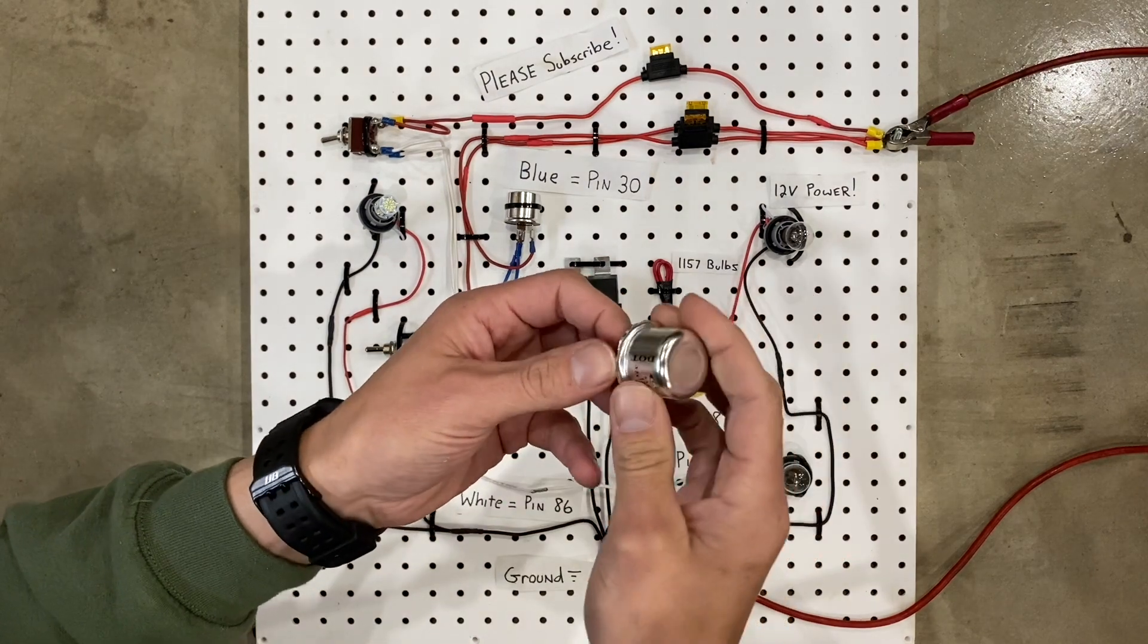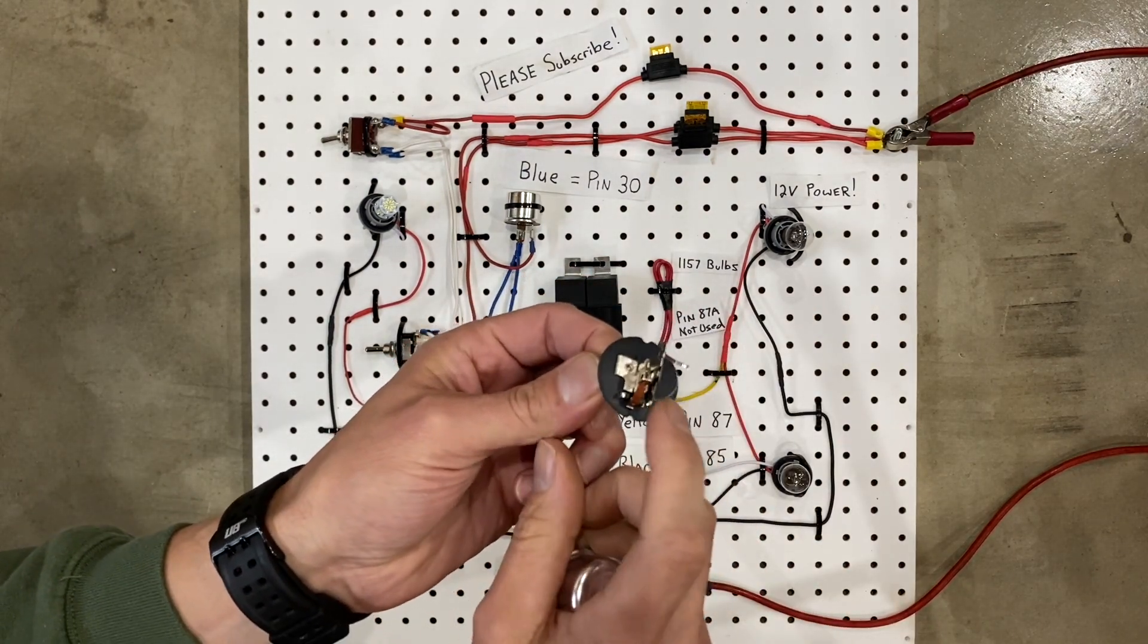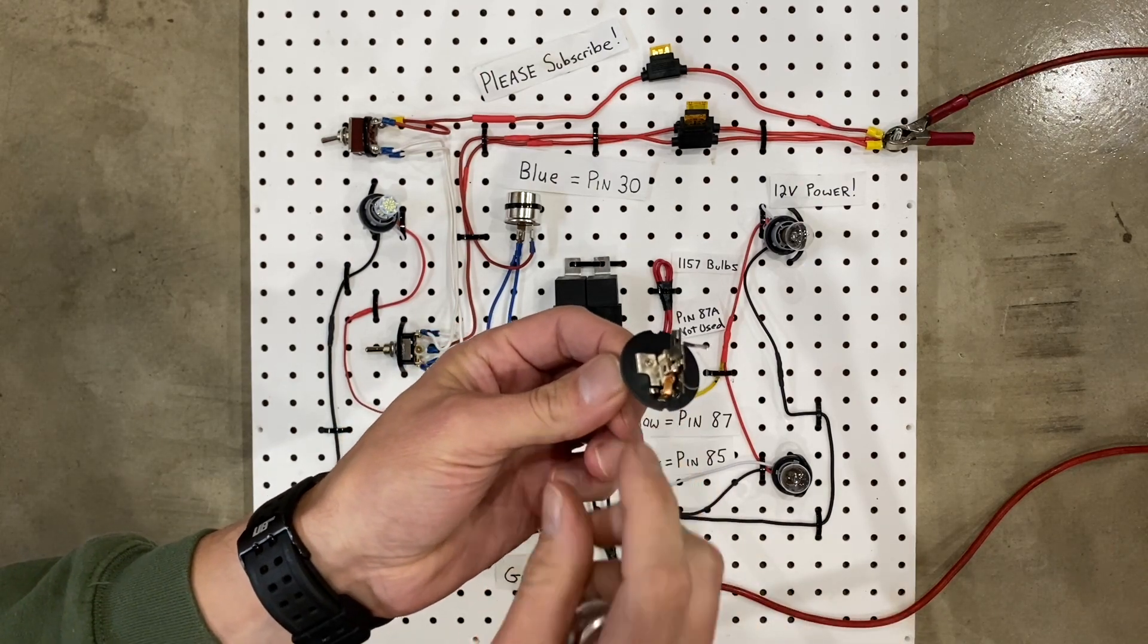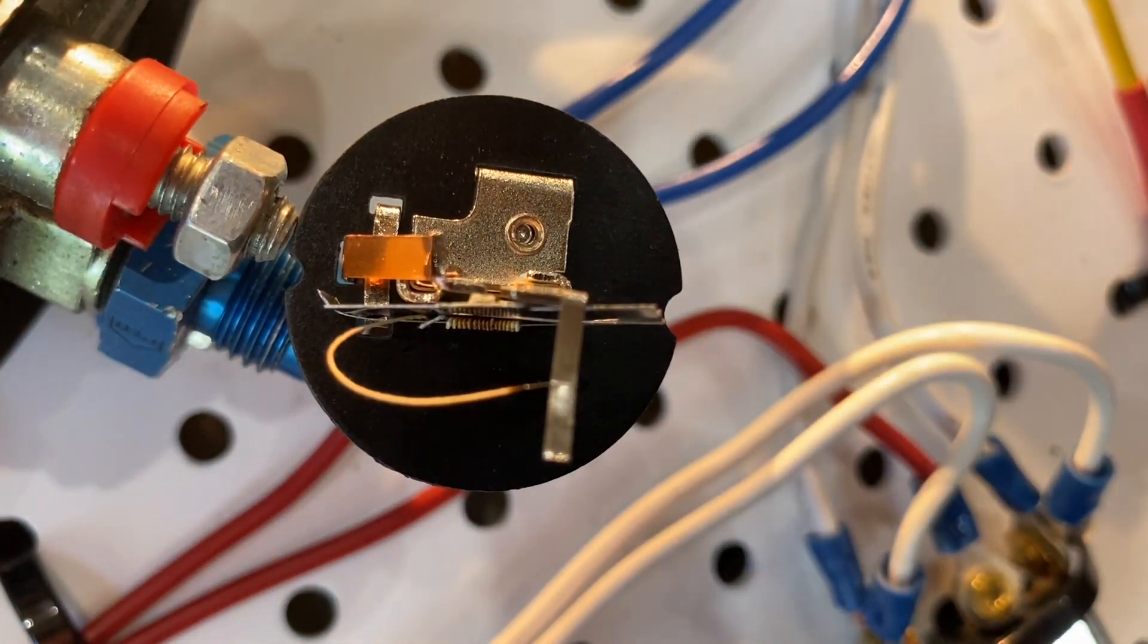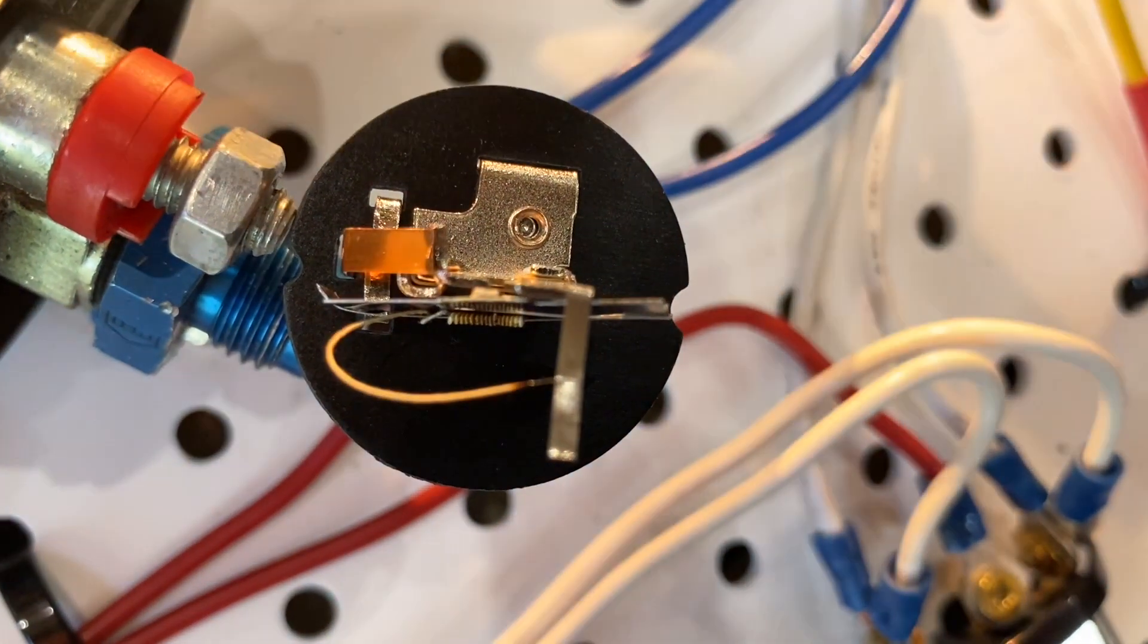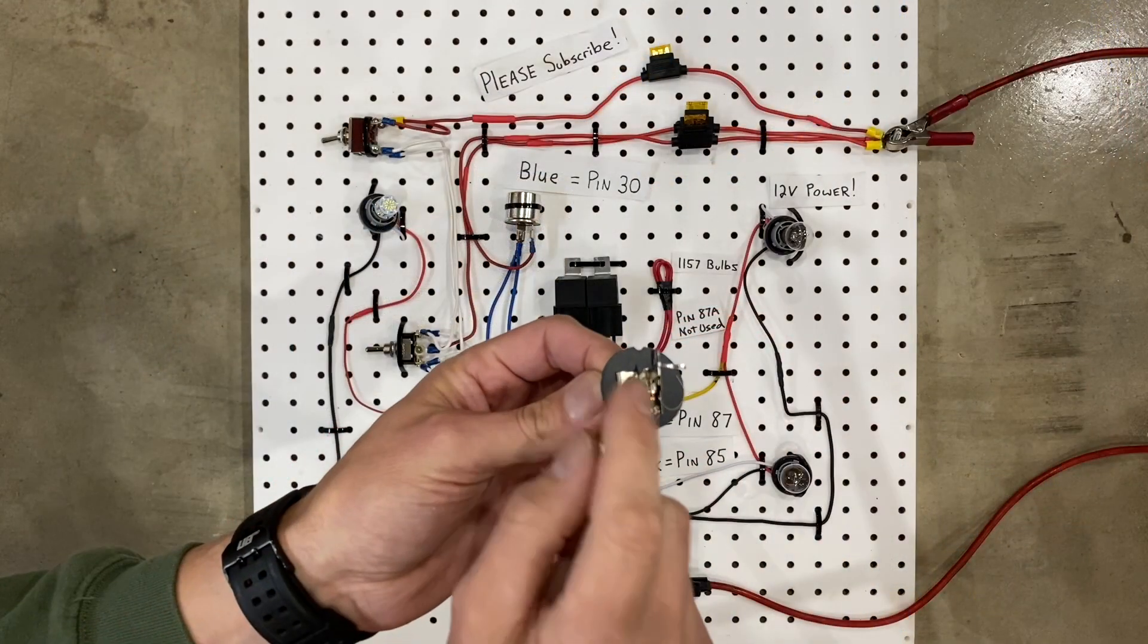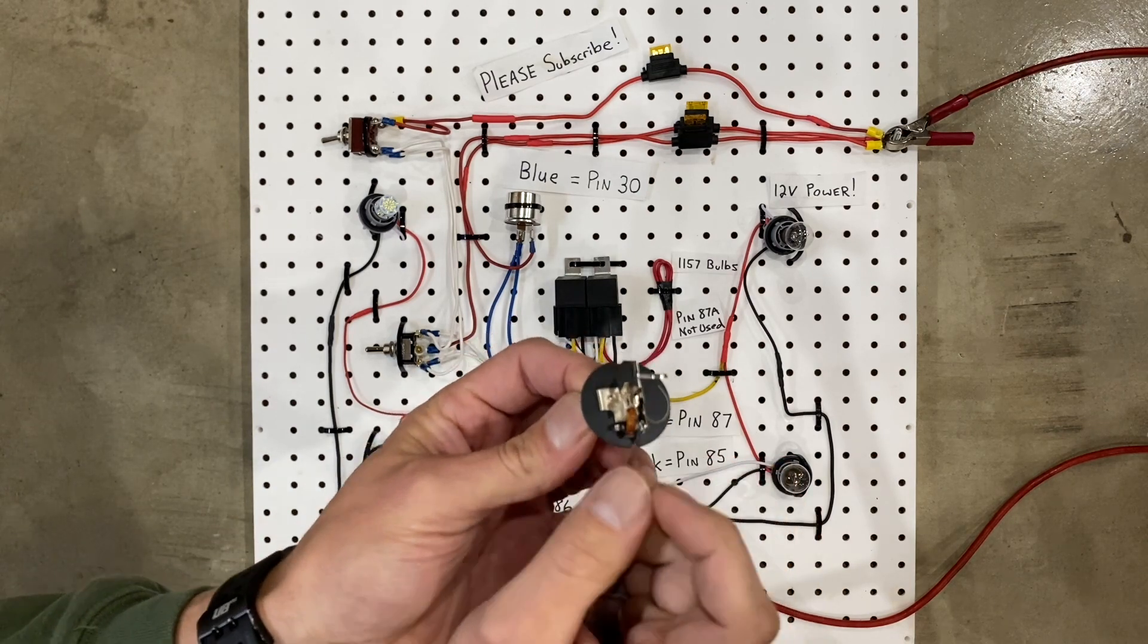Now here's one up close. If you look inside, right here is a bunch of little metal pieces. These metal pieces are pretty cool because when the electricity flows through them, the metal actually bends because it actually warms up.